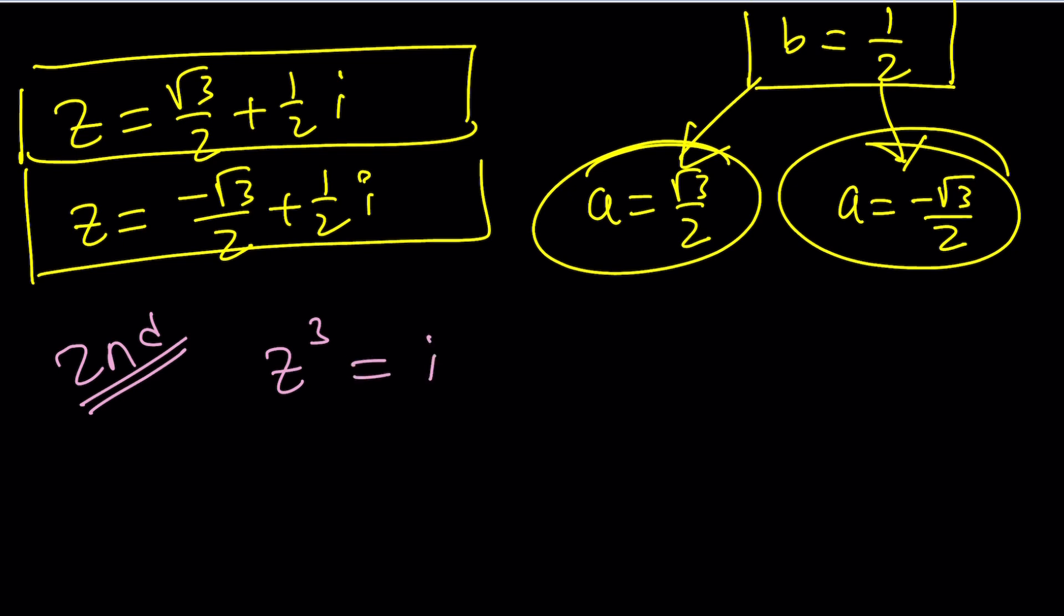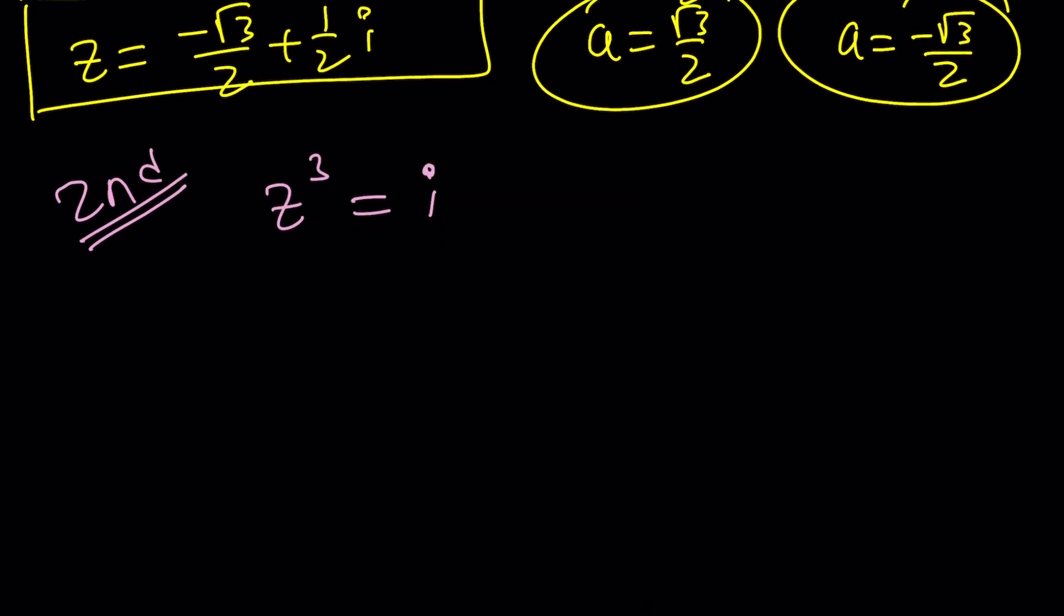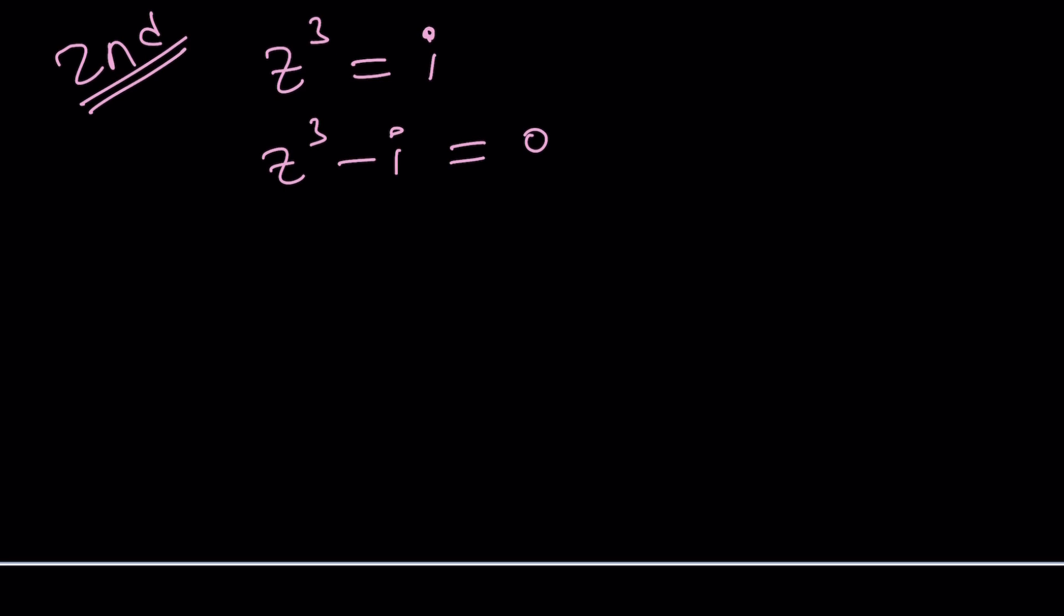So, we have z³ = i. Let's subtract i from both sides. Now, this kind of looks like a cube minus i, but we can turn it into a sum or difference of two cubes. Remember, i³ is -i, right? You hopefully know i² is -1, i to the first power is i itself, and i to the fourth, of course, is 1. But we need i³. So, let's replace -i with i³.